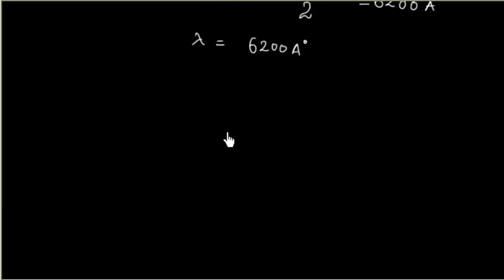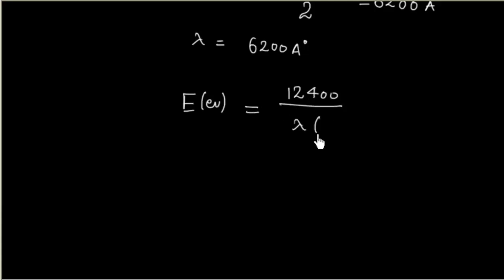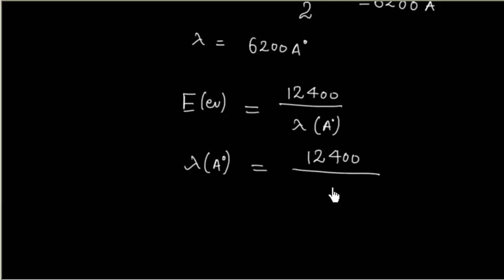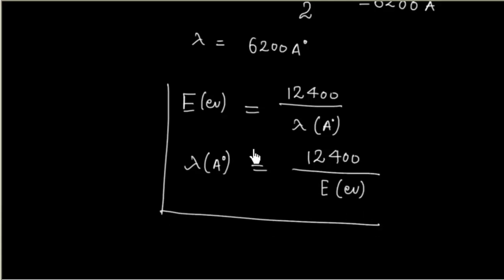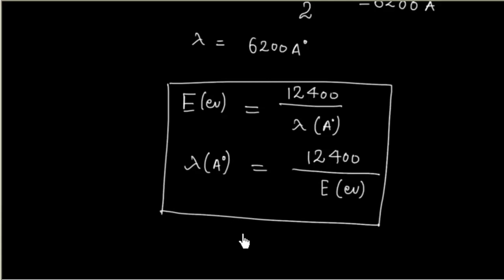In summary: to calculate energy in eV, use E = 12400 / λ, with λ in angstroms. To calculate λ in angstroms, use λ = 12400 / E, with E in electron volts. This formula is very useful because it incorporates the value of h × c directly, so we do not have to recalculate it every time.